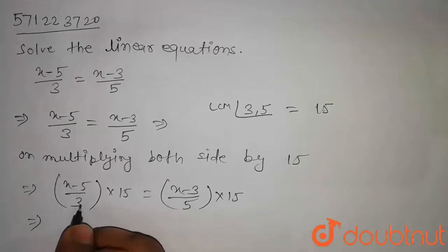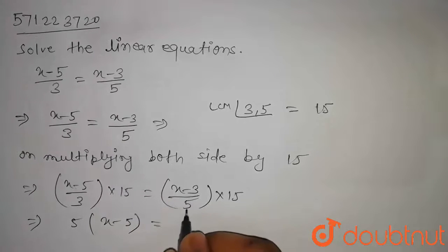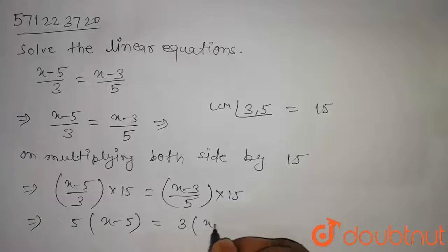This will be equal to 15 divided by 3, that is 5 into x minus 5, equal to 15 divided by 5 will be equal to 3 into x minus 3.